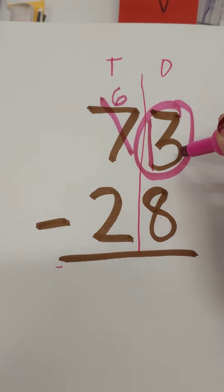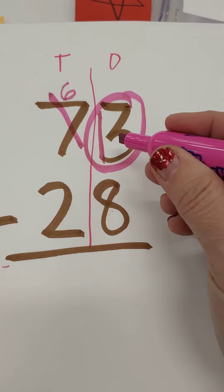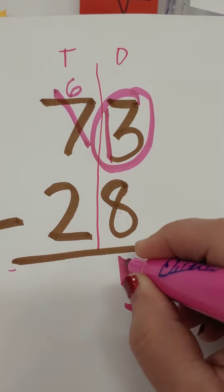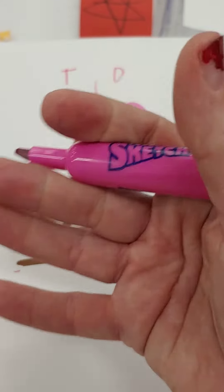13 take away 8. 13, 12, 11, 10, 9, 8, 7, 6, 5. The answer is 5. You could also count up from 8 to 13. 8, 9, 10, 11, 12, 13, takes 5.